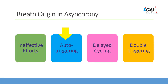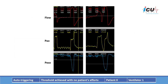The second case is auto triggering. Looking at this graph, you can see that there is no inspiratory effort by the patient, yet there is a ventilator breath. The patient did not trigger the ventilator — it was triggered automatically. You can see a rise in pressure, inspiratory flow, and expiratory flow.